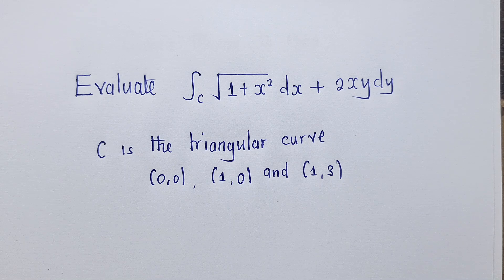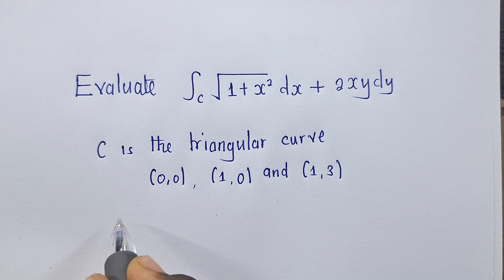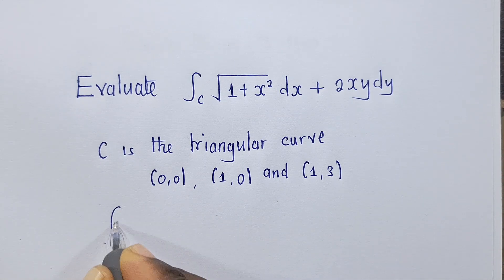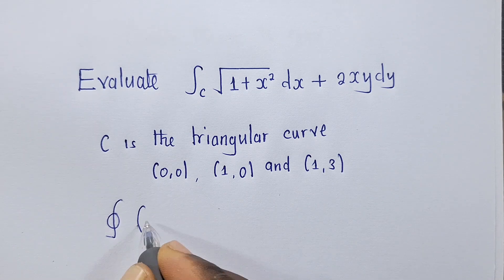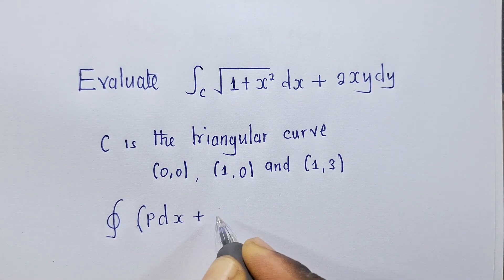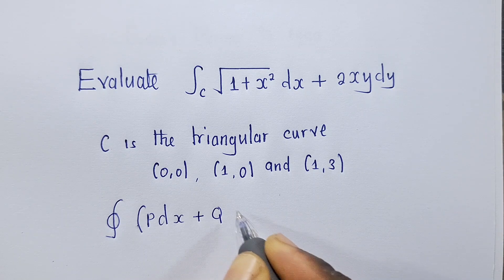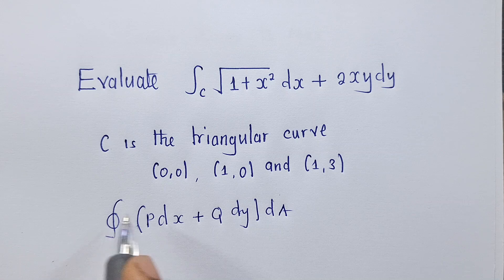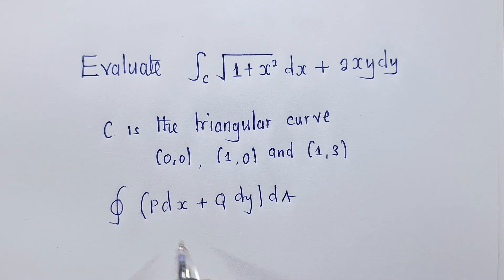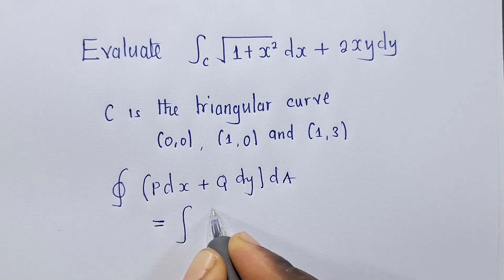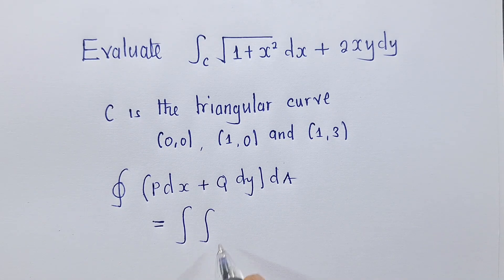What you need to know for this question is that there is a formula for Green's theorem which says that when you've got something like this, the line integral of P dx plus Q dy around some region, this will simply be equal to the double integral over that region.